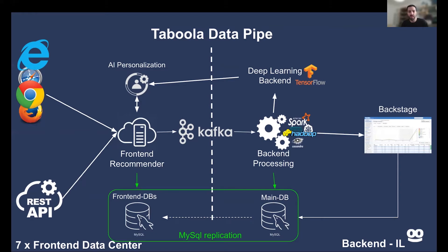We use a source-replica setup where we have a single DB — our main DB — in the back-end, which holds terabytes of information and gets all the transactions written to it: all the inserts, updates, and deletes. All that gets replicated through MySQL's built-in replication to the front-end data centers as several copies in each data center. Closing the loop and feeding the back-end layer with information generated in the front-end, we use Kafka to bridge between the data centers, making the information accessible for all back-end services at once.